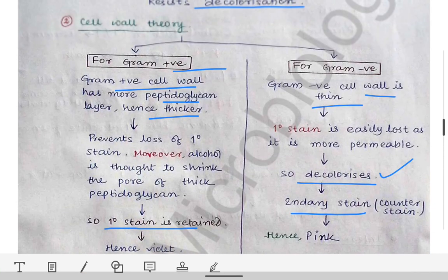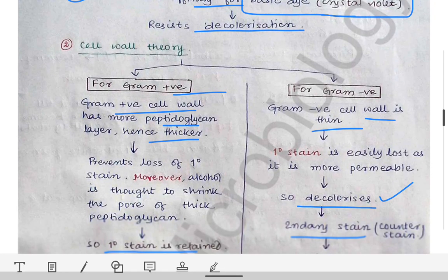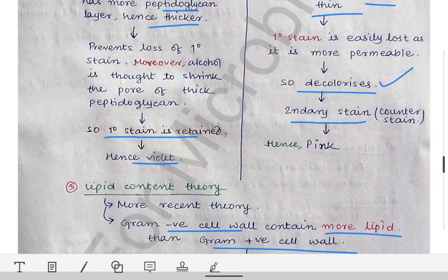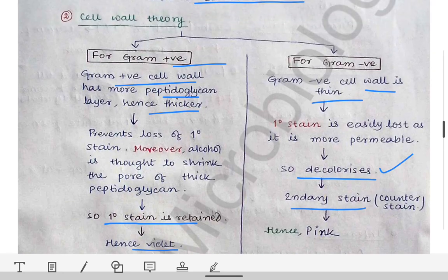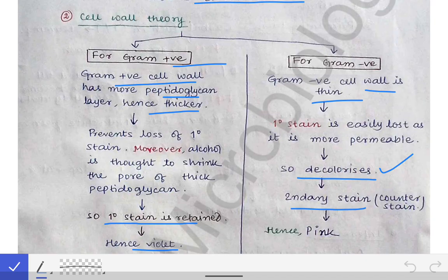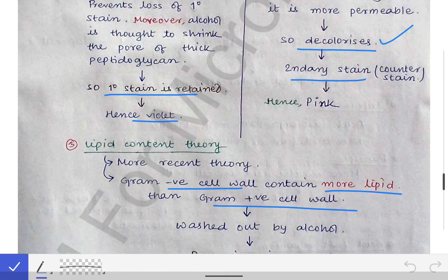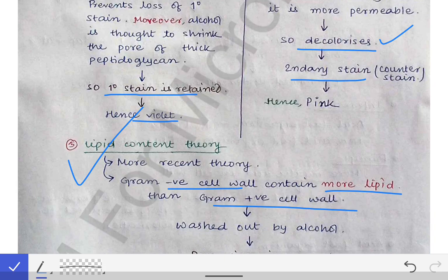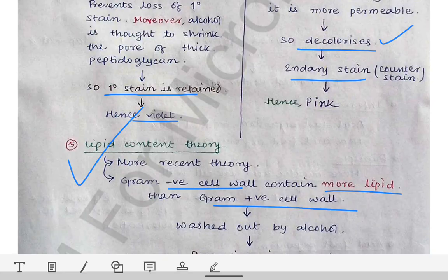These are the three principles or theories behind Gram staining. The most recent is the lipid content theory, but the cell wall theory and lipid content theory are both important and best explain the reason behind Gram staining. These theories may be asked in university exams and vivas — they are easy concepts and can be remembered quite easily.